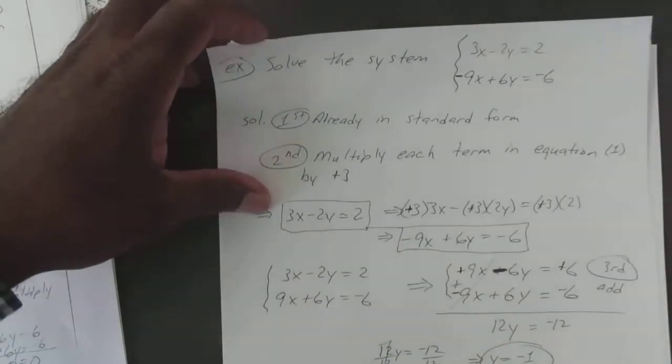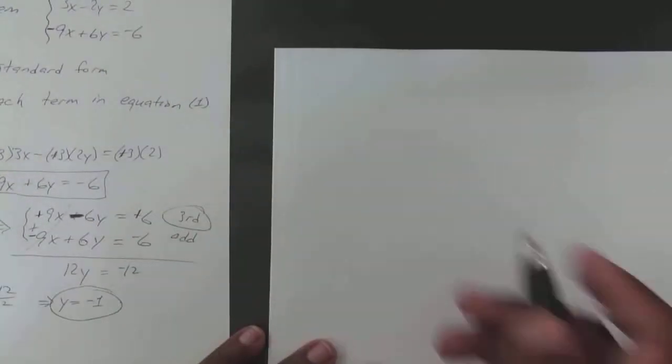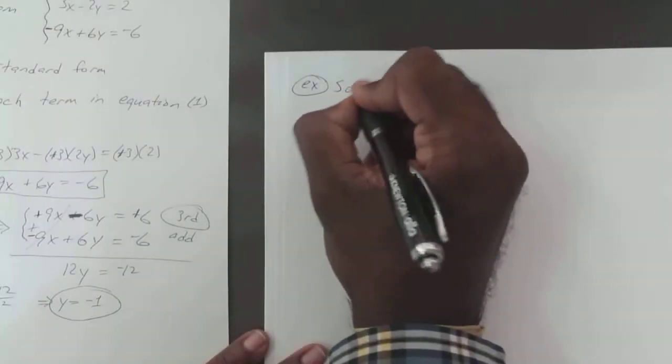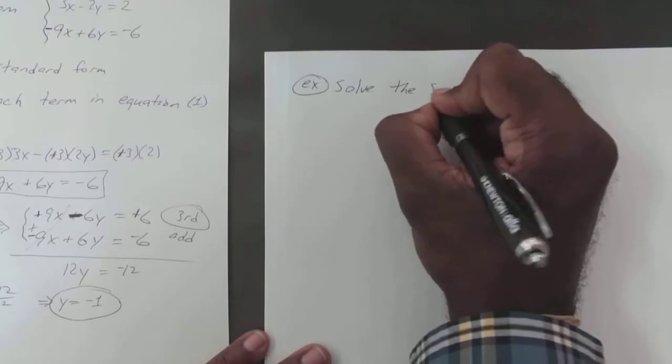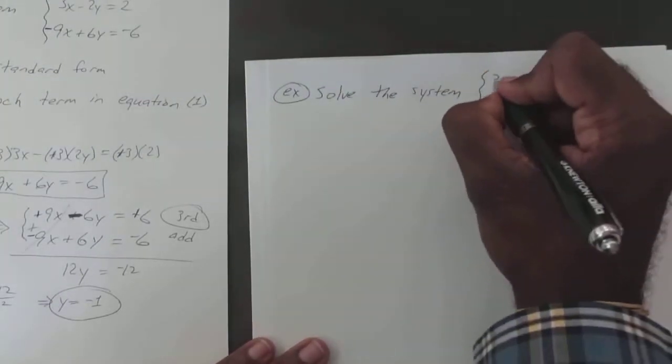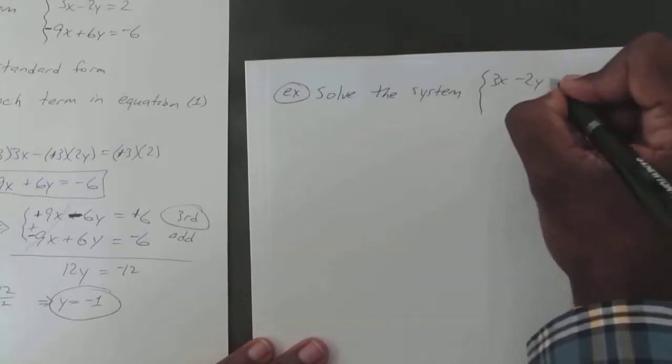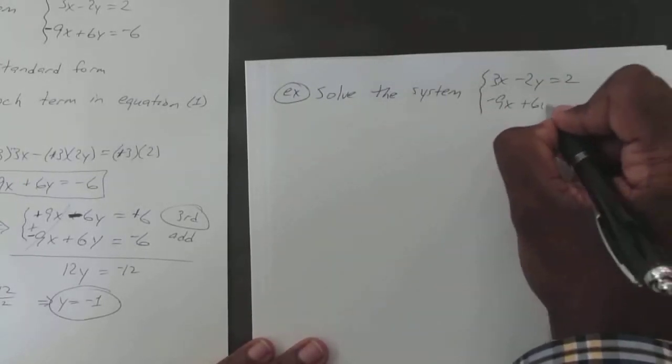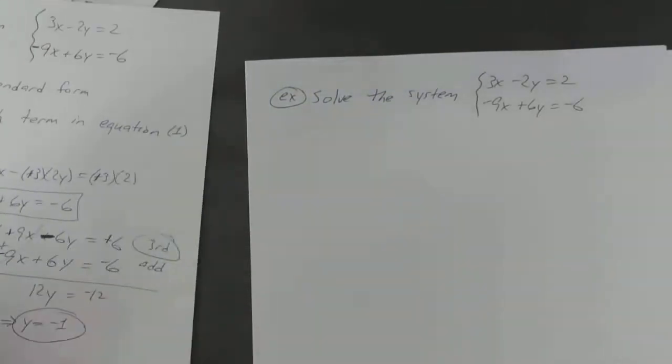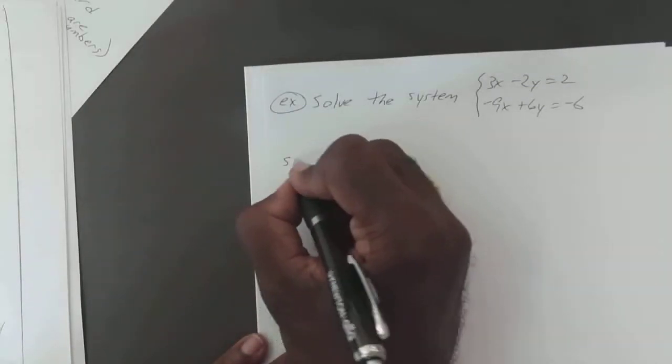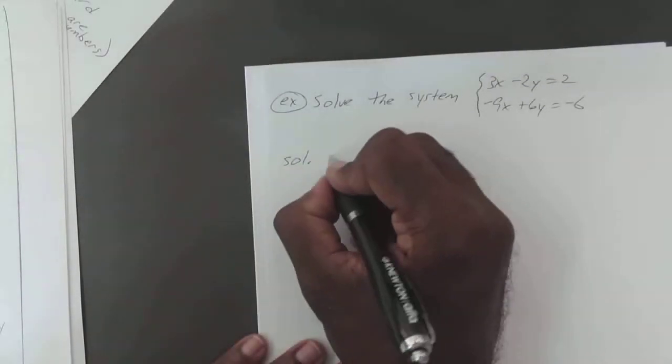Alright. So, to avoid confusion, I'm just going to go ahead and redo this one real quick, since my original problem was flawed. 3x minus 2y equals 2. Negative 9x plus 6y equals negative 6. Alright, we'll go through the first half of it pretty quickly, because it's kind of a short problem.